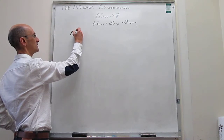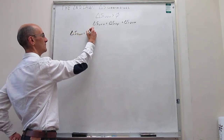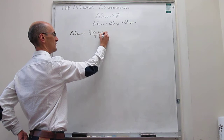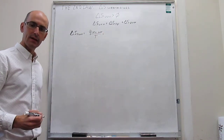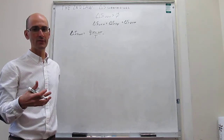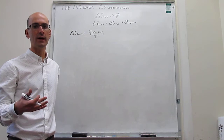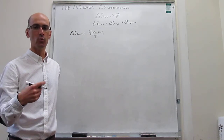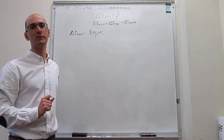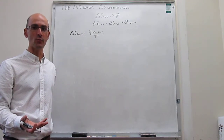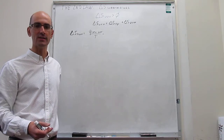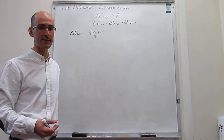The definition of the change in entropy in the surroundings is no different than it is in the system — it is the heat reversible in the surroundings over the temperature. Something important about the surroundings is that they are huge compared to the size of the system. Every single change in the system, any transfer of energy between the system and the surroundings, will be infinitesimal from the point of view of the surroundings because they are so large.